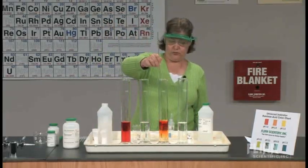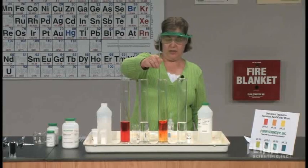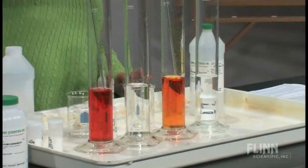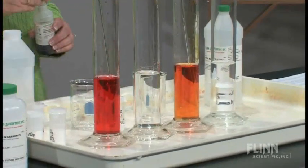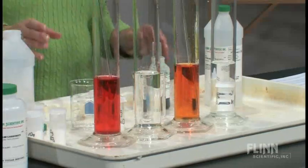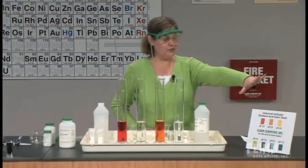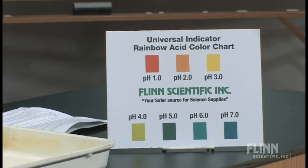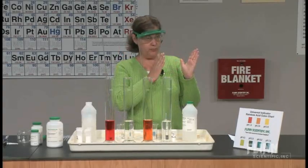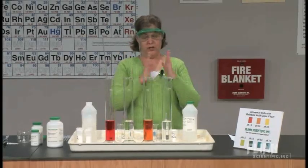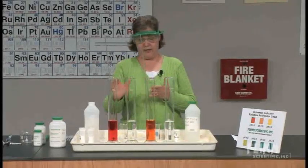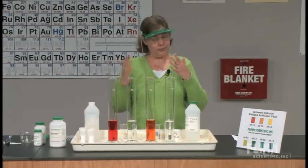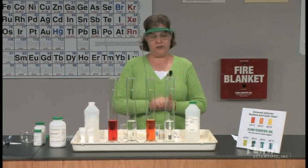The first thing we're doing is comparing the pH of the two different acids. We've got a nice red color in cylinder number 1. Looking at our color chart, that red color corresponds to a pH of 1 or less — so all we can really say is less than or equal to 1 at this point. That's the one molar HCl. We know that should actually be about pH 0.